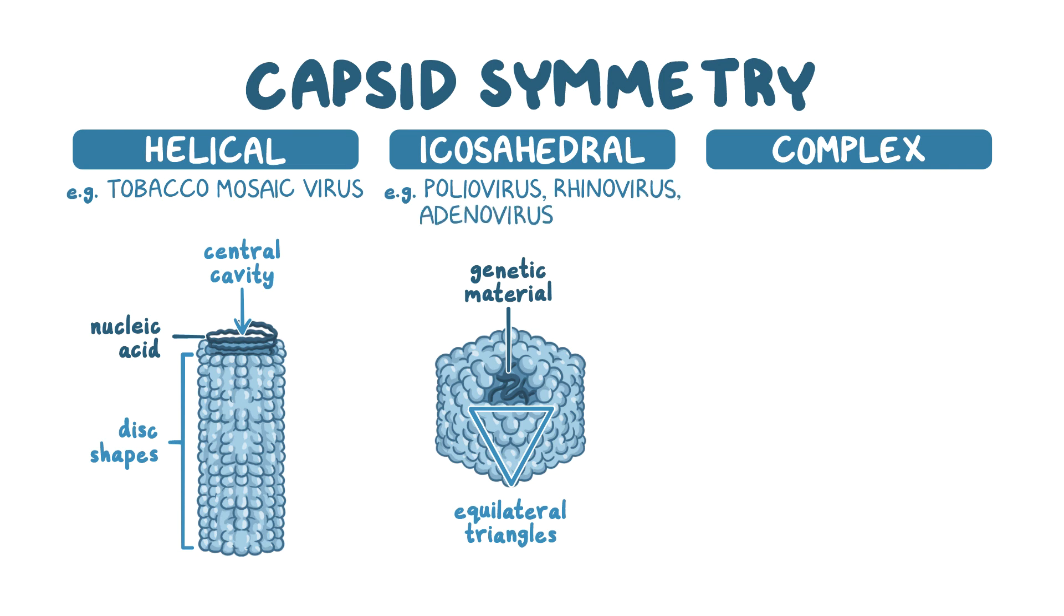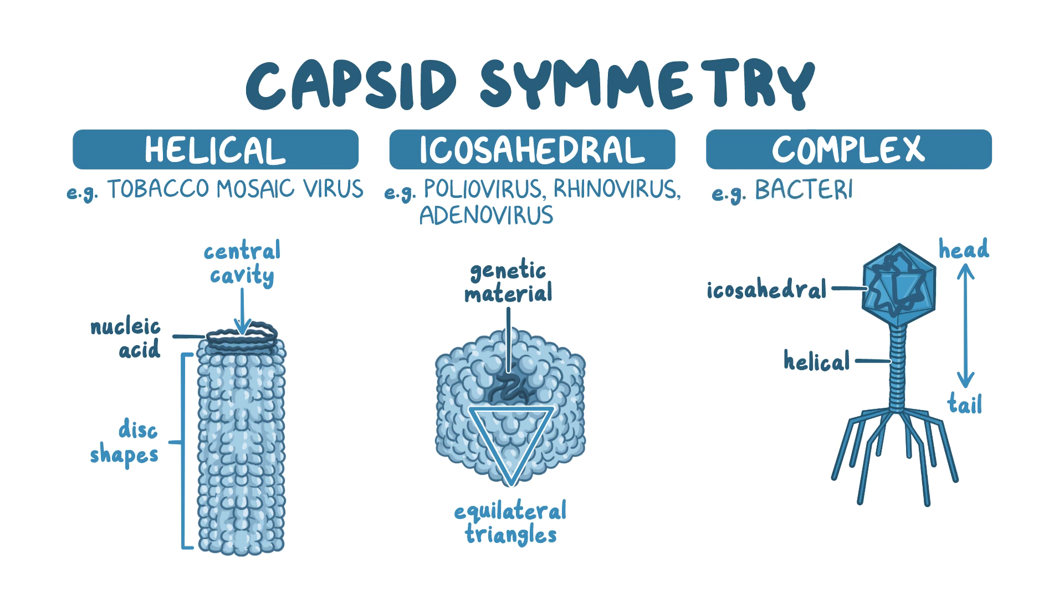The complex viruses have a combination of icosahedral and helical shape and may have a complex outer wall or head-tail morphology. The head-tail morphology is unique to viruses that infect bacteria, called bacteriophages, and they have an icosahedral shaped head and a helical shaped tail. These viruses use their tail to attach to the bacterium and then they create a hole in the cell wall and insert their DNA into the cell using the tail as a channel.